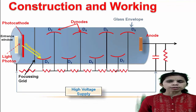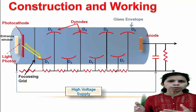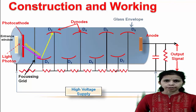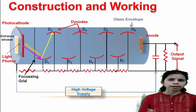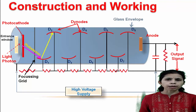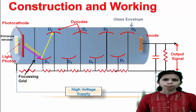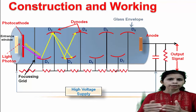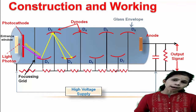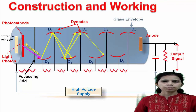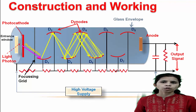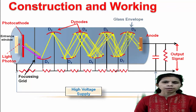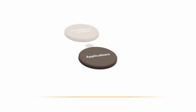The photoelectrons are accelerated towards dynode 1, which is at a higher potential than the photocathode. On colliding with dynode 1, these photoelectrons liberate secondary electrons, which are then accelerated towards dynode 2 at a still higher potential. On striking dynode 2, more secondary electrons are emitted, and these are attracted to dynode 3. The process of secondary emission continues until the emitted electrons are collected by the last anode, with the secondary emission multiplying at each dynode.